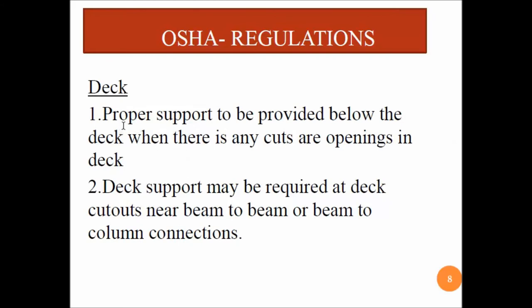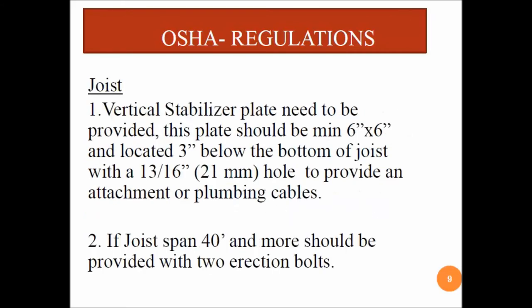For the deck, proper support must be provided below the deck when there are any cuts or openings. Deck support may be required at deck cutouts near beam-to-beam or beam-to-column connections. For joists, a vertical stabilizer plate needs to be provided; this plate should be minimum 6 inches by 6 inches, located 3 inches below the bottom of the joist, with a 13/16-inch hole to provide attachment for a pumping cable. If the joist span is more than 40 feet, it should be provided with two erection bolts.